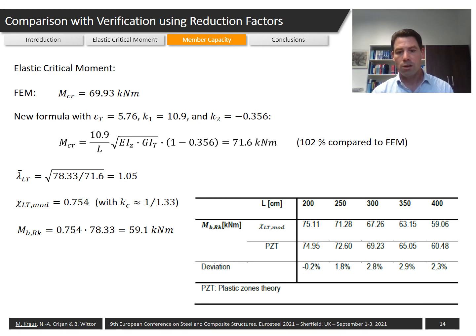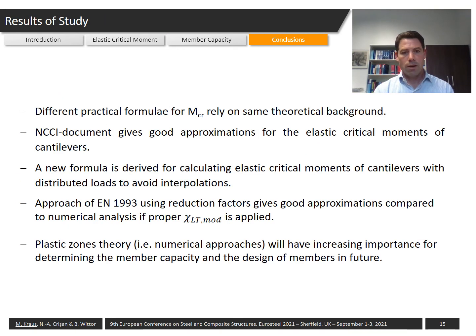You see in the table that different member lengths are varied and the solutions are compared to each other, and we see that Eurocode gives very good agreement to the solution of plastic zones theory. At the end of this presentation, let me briefly conclude. We saw that different calculation formulae rely on the same theoretical background regarding the elastic critical moment. We see that NCCI document gives good approximation in this context, and we derived a new formula with which we can avoid certain interpolations.